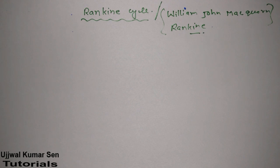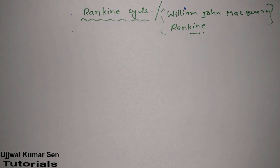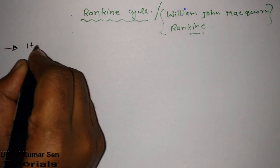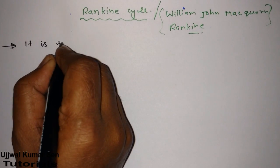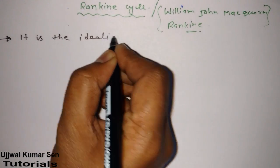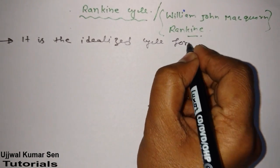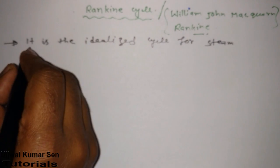William John Macro Rankine modified the Carnot Cycle. This modification helped us to get a practically possible cycle — the implementation of this cycle is practically possible. So this cycle is also known as the idealized cycle for a steam power plant.